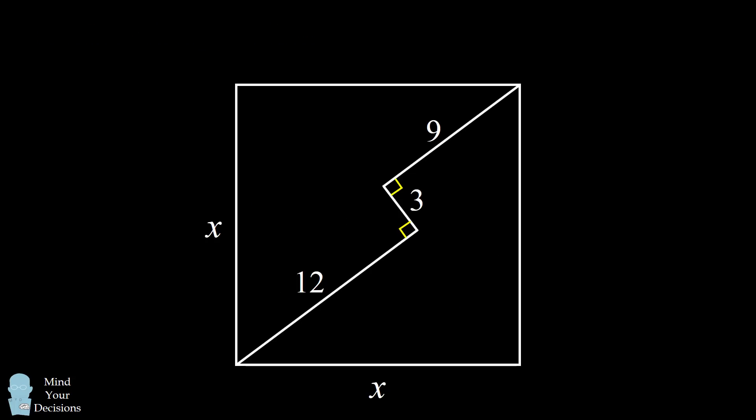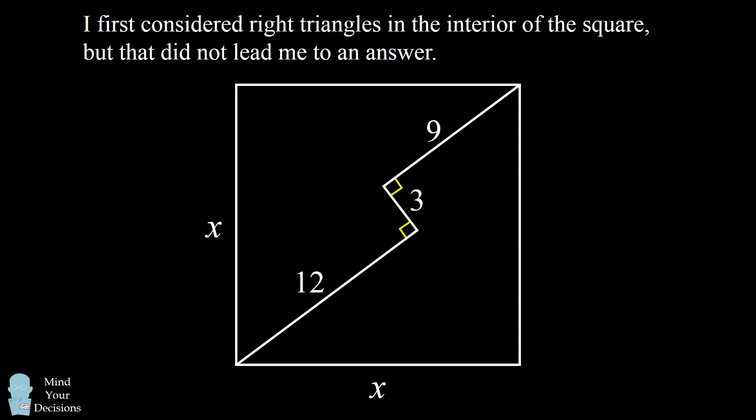So before I present the approach that eventually led me to the answer, I want to go over some of the approaches that did not work for me. I first considered the right triangles in the interior of the square. While I could solve for the areas of these triangles and the hypotenuses of these triangles, this didn't lead me directly to the length of the square's side.